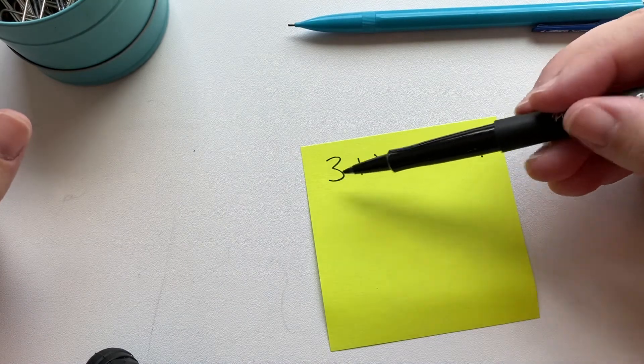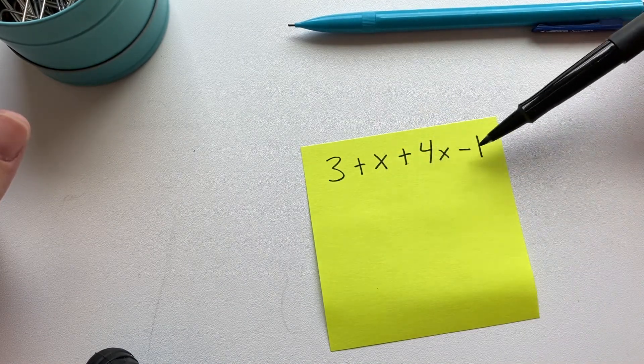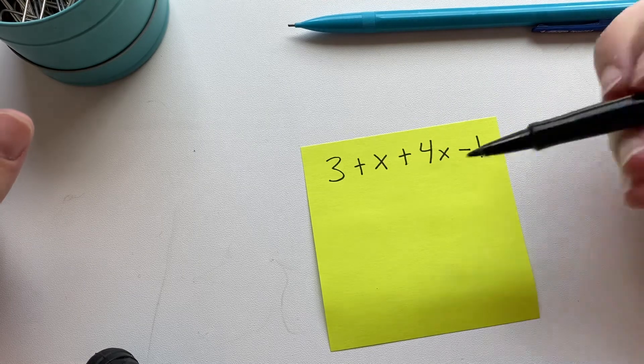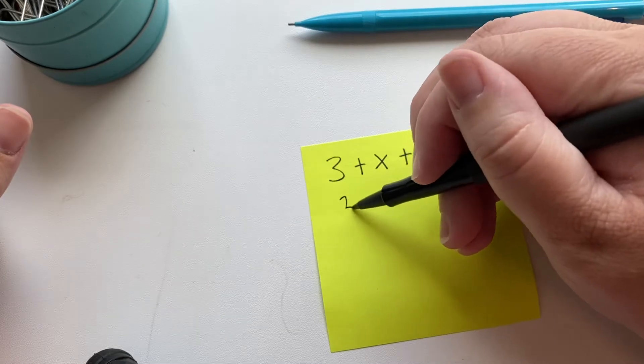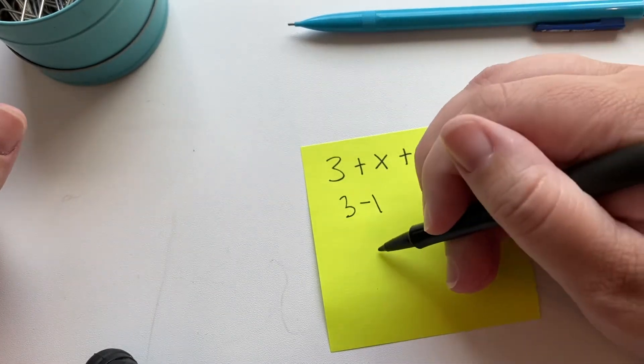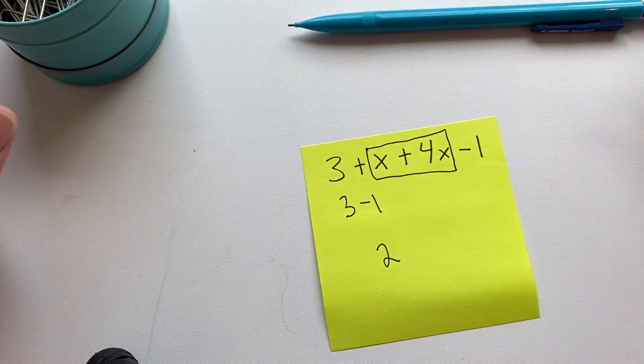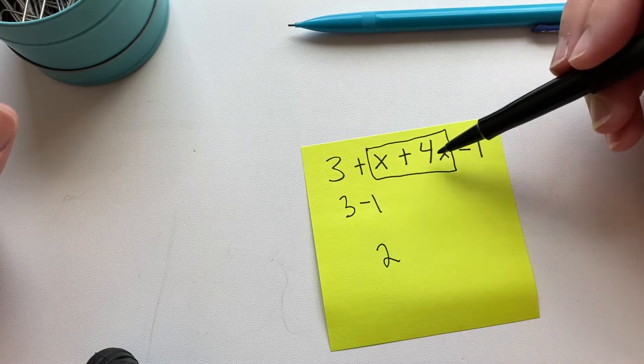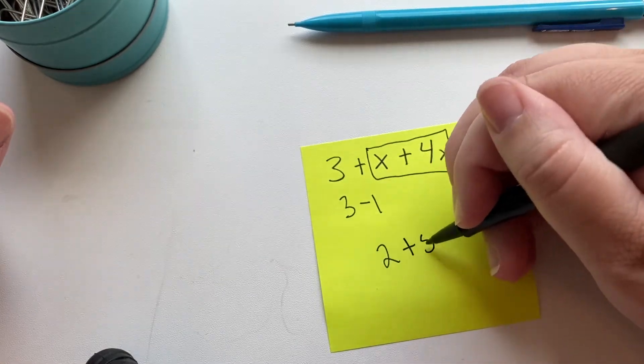So this 3 does not have a variable. This x is 1x and this is 4x and this is minus 1. So we can put the 3 and the minus 1 together, 3 minus 1, and 3 minus 1 is 2. And we can put these two together because they both have the variable x. So 1x plus 4x is 5x.